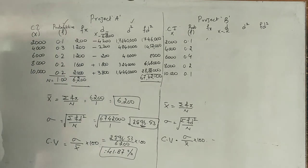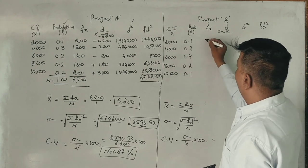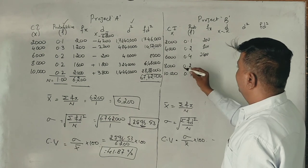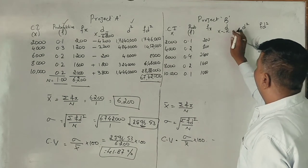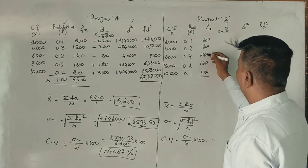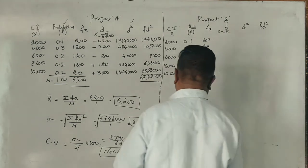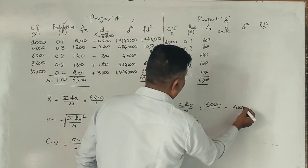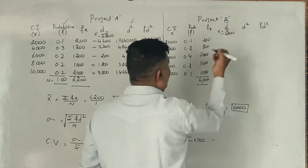Now Project B: 2000 into 0.1 equals 200. Then 800, 2,400, 1,600, 1,000. Mean calculation: 6,000 divided by 1 equals 6,000. Correct?